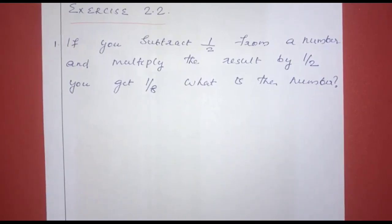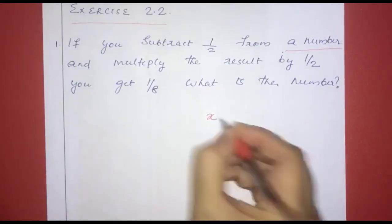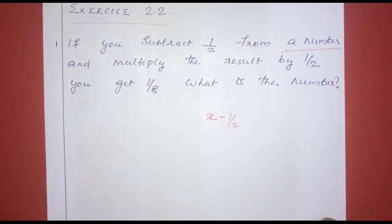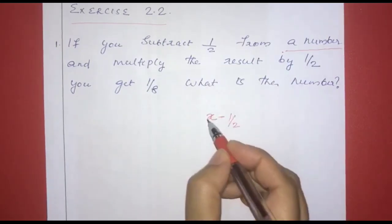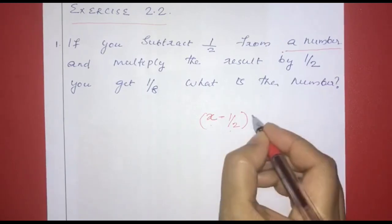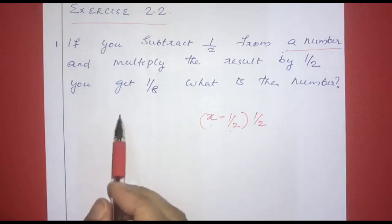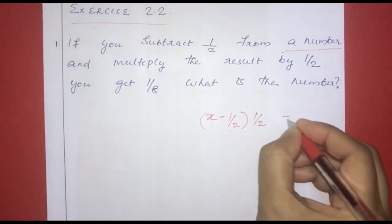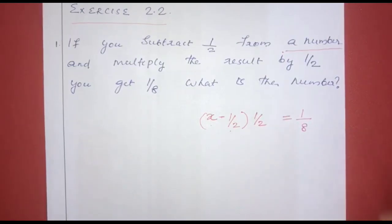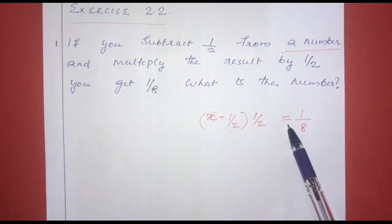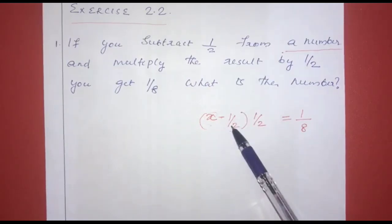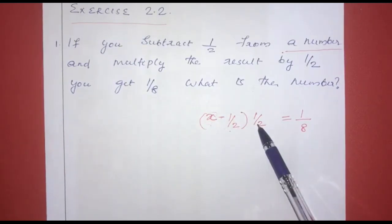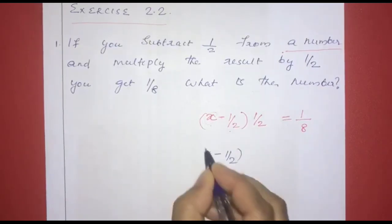If you subtract 1/2 from a number and multiply the result by 1/2, you get 1/8. Setting up the equation: (x minus 1/2) into 1/2 equals 1/8.